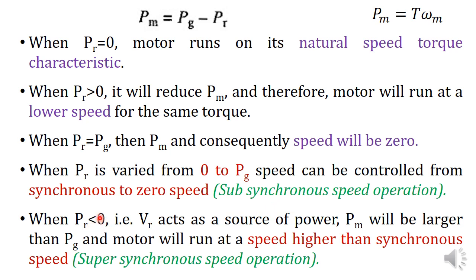If Pr is less than 0 — that is, Pr is negative — the slip power is negative, meaning Vr acts as a source of power, and Pm will be larger than Pg. Since Pm = Pg − Pr and Pr is negative, Pm will be larger than Pg, and the motor will run at a speed higher than synchronous speed. This is known as super-synchronous speed operation. Both sub-synchronous and super-synchronous operation can be implemented using the slip power recovery scheme.